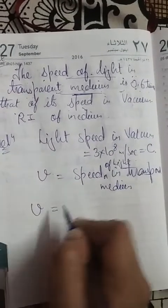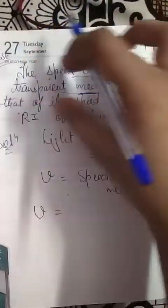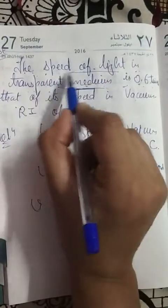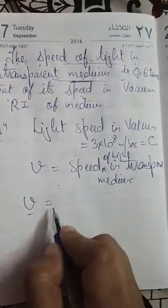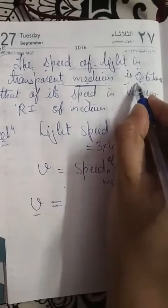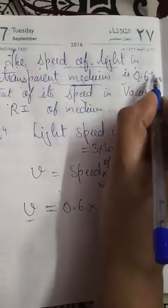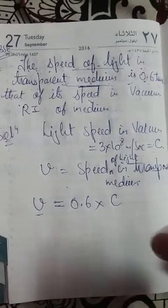So v is the speed of light in the transparent medium. Now, this is a word problem — look carefully at how we convert it into mathematical form. Speed of light in transparent medium v equals 0.6 times that of speed in vacuum, which is c. So v = 0.6c.